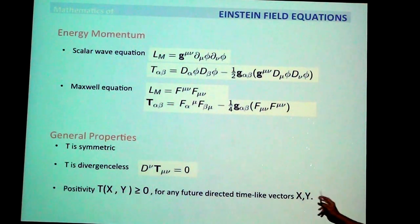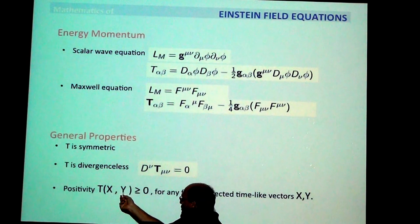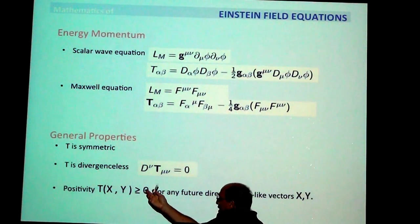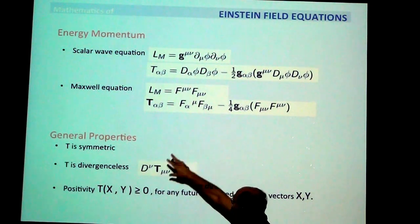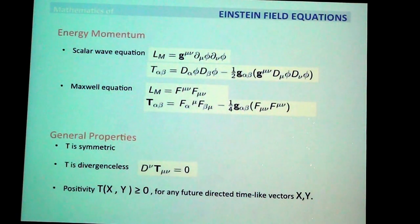Third, there is the positive energy condition — extremely important. It says that if you contract T with two vector fields which are time-like and both future-oriented, you get a positive quantity. In each case you calculate this explicitly, and it is very important for estimates.